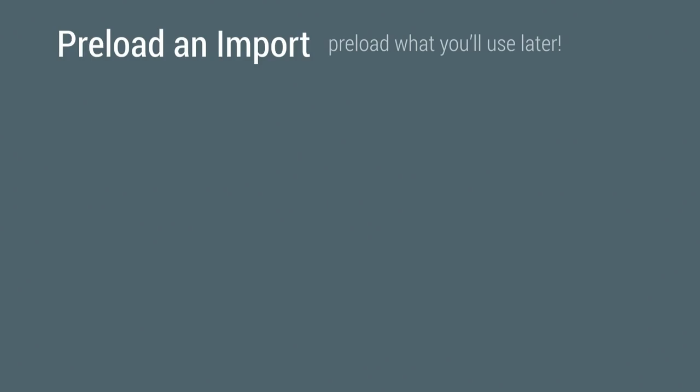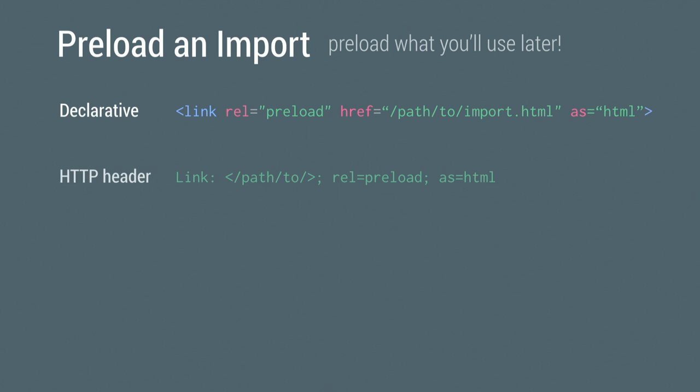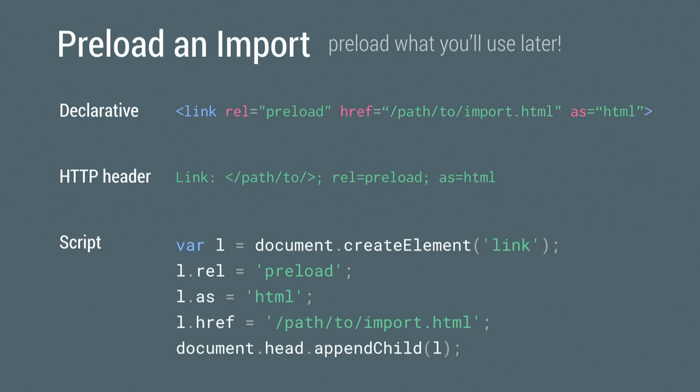Let's talk about some really exciting new APIs coming down the pipeline. If you're going to dynamically load CSS or imports with custom elements, you'll soon have the ability to preload — tell the browser to put a resource in cache and have it ready. You can declare it as link rel='preload' with your resource URL, set an HTTP header, or dynamically set the rel to preload in script. This is a high-priority resource fetch.